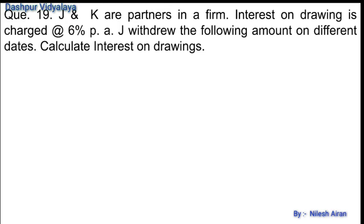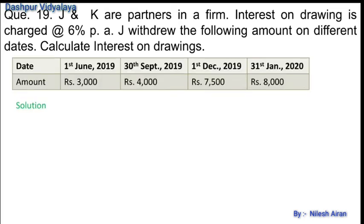Another example: J, N, K are partners in a firm. Interest on drawings is charged at 6% per annum. J withdrew the following amounts on different dates: rupees 3000 on 1st June 2019, rupees 4000 on 30th September 2019, rupees 7500 on 1st December 2019, and rupees 8000 on 31st January 2020.